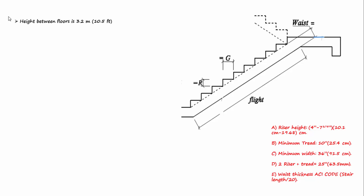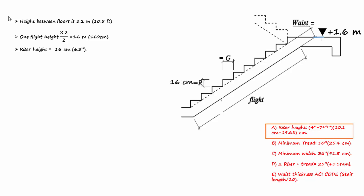Assume the height between two floors is 3.2 meters or 10.5 feet. The first thing we need to do is divide the floor height into two parts because a U-shaped stair contains two flights. We will assume riser height is 16 cm or 6.3 inch, which is within international building code recommendations. The number of risers in one flight equals 160 ÷ 16 = 10 risers.